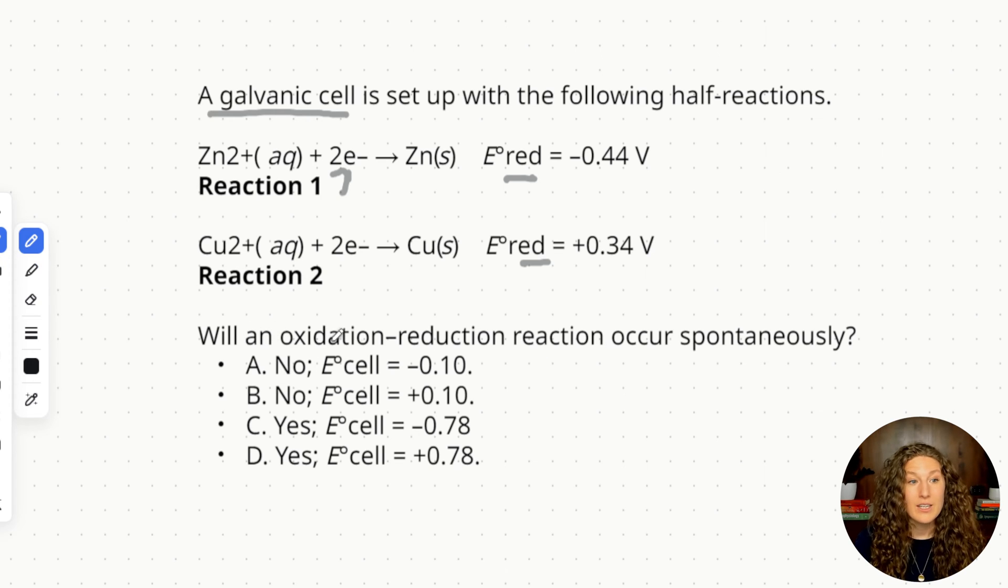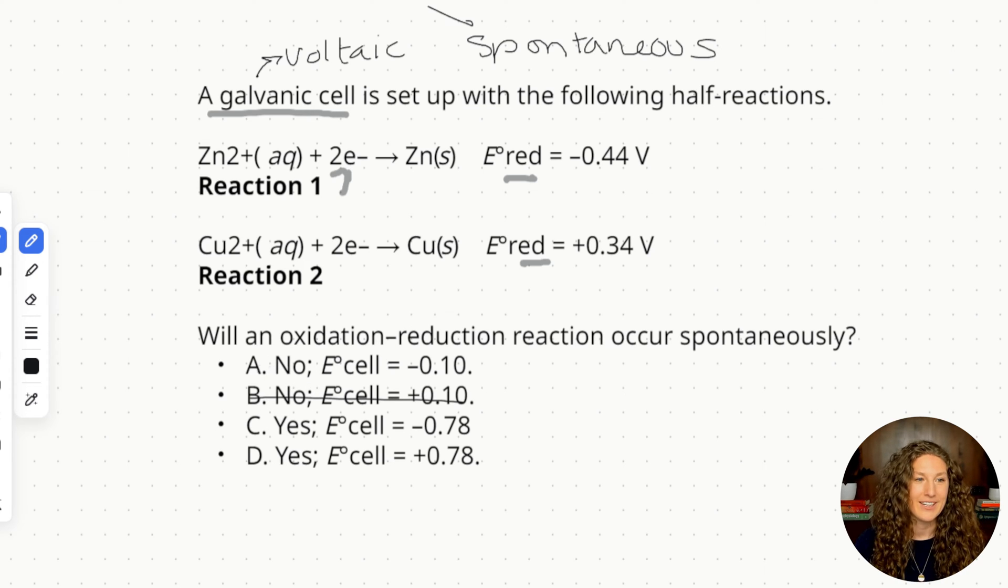So they're asking us will an oxidation reduction reaction occur spontaneously? Our first thing that we could know and this is our secret rule of the MCAT for electrochemical cells is that a galvanic or voltaic cell by definition are spontaneous. So just by knowing that this is a galvanic cell or a voltaic cell we know that these are spontaneous cells. So the answer to start off with is yes we can immediately eliminate C and D.